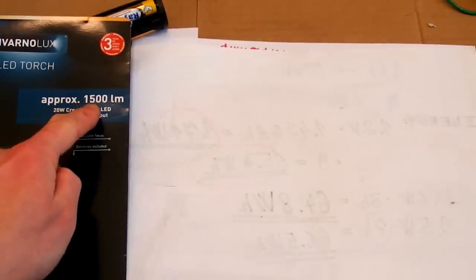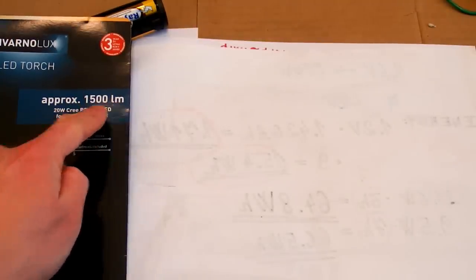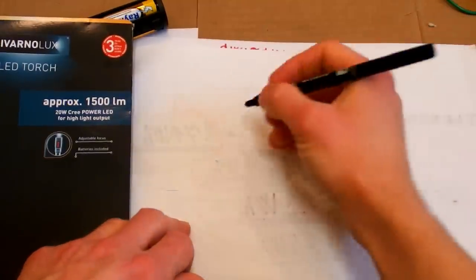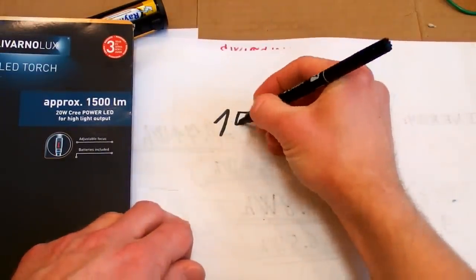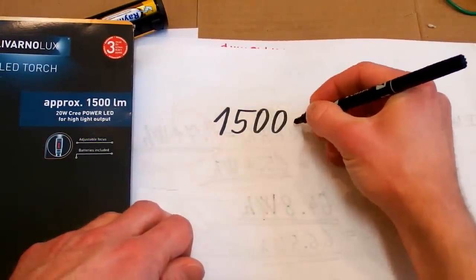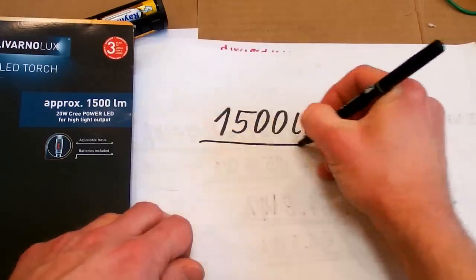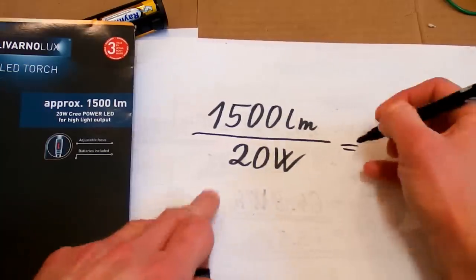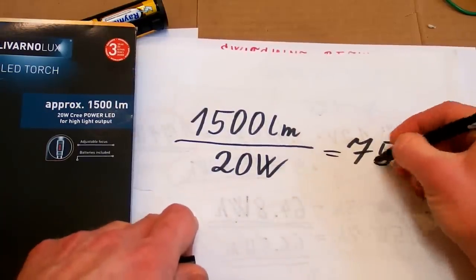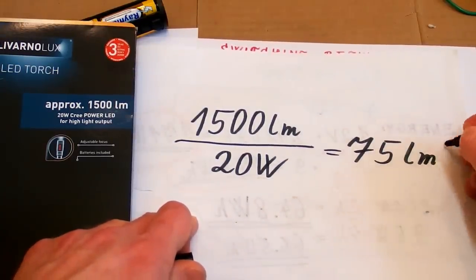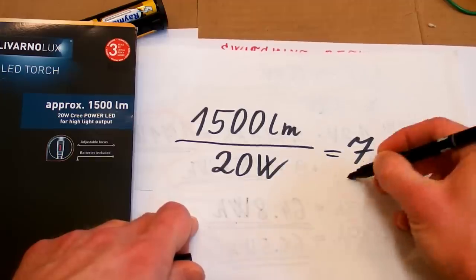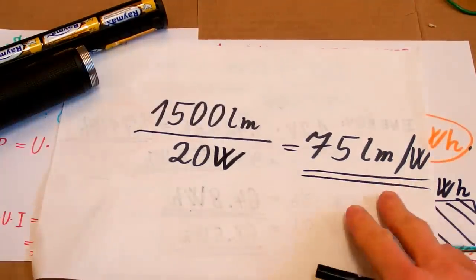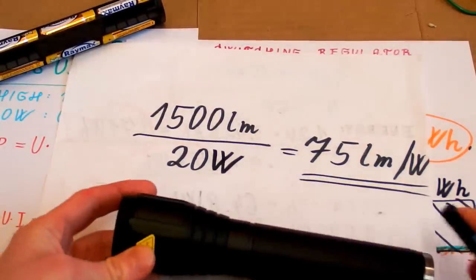And the packaging says the light output is 1500 lumens and the power is 20 watts. So what's the efficiency of the LED? Which is about 75 lumens per watt. Which is not impossible. That's about a normal efficiency of a real life LED in real life conditions.